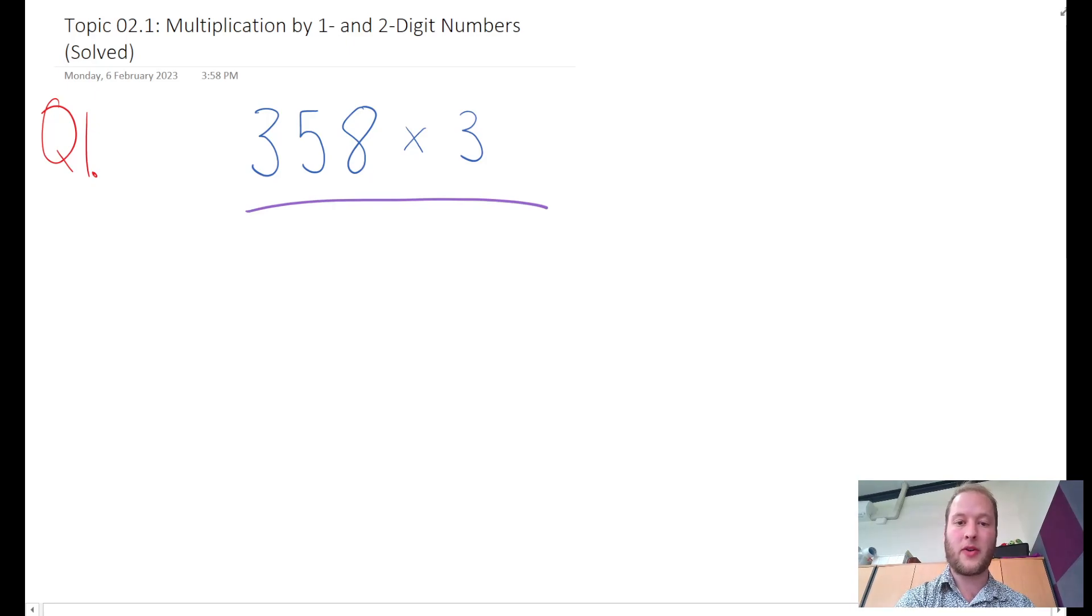Using the vertical method, I need to rewrite the question. I've got 358 times, and then I'm going to put 3 right underneath the 8 because it's in my ones column. I've got my ones, my tens, my hundreds, so I need to make sure that I line it up in the right place value.